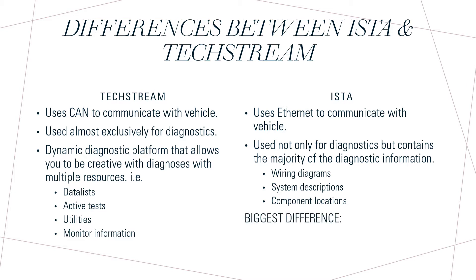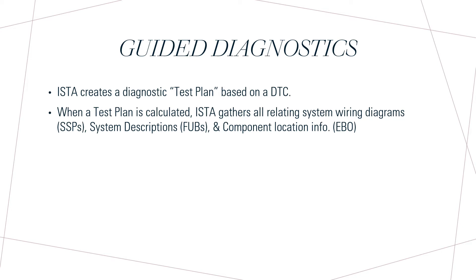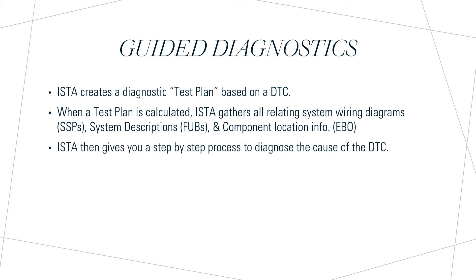What's the biggest difference between TechStream and ISTA? ISTA is a lot less dynamic because it uses guided diagnostics. What ISTA does is create a diagnostic test plan based on a DTC. When a test plan is calculated for a given DTC, ISTA gathers all the related system wiring diagrams — called SSPs — system descriptions, called FUBs, and component locations, called EOBs, and puts it all into one test plan. Then ISTA gives you a step-by-step process to diagnose the cause of the DTC.